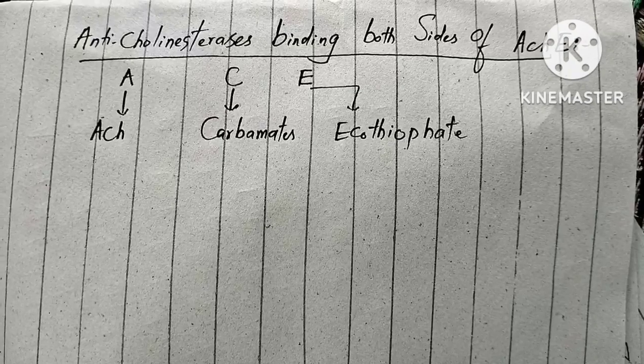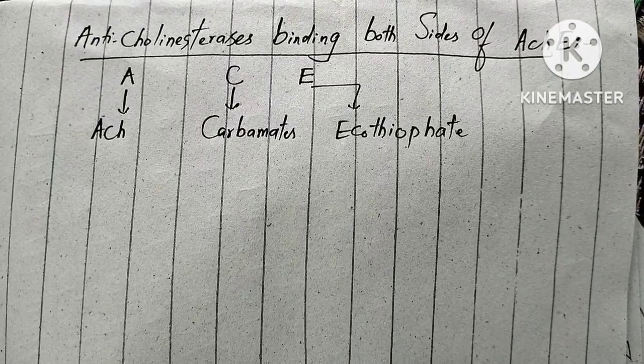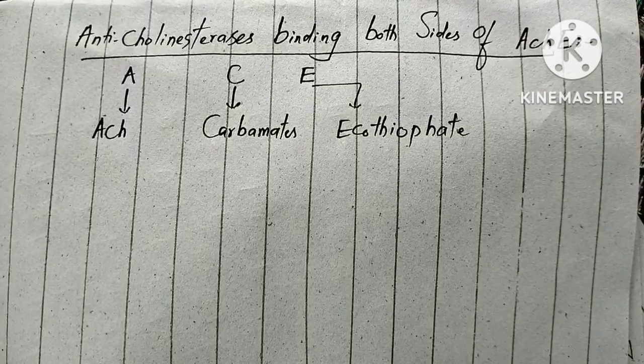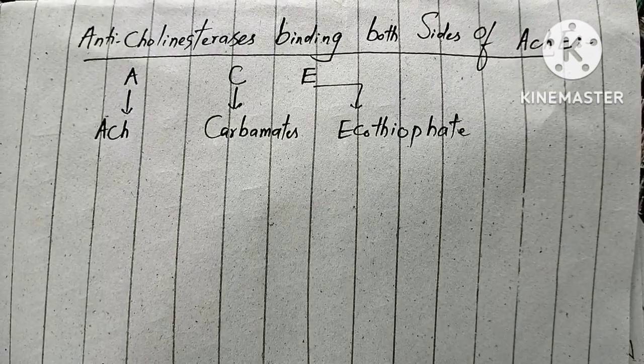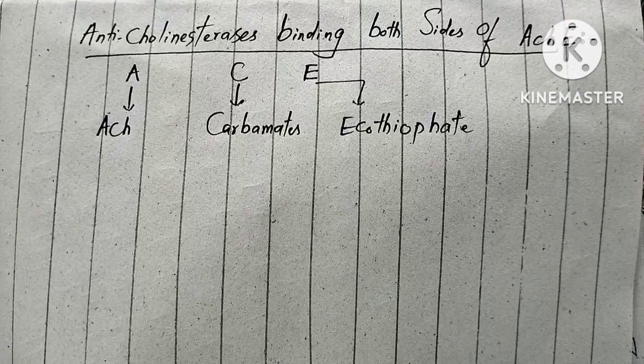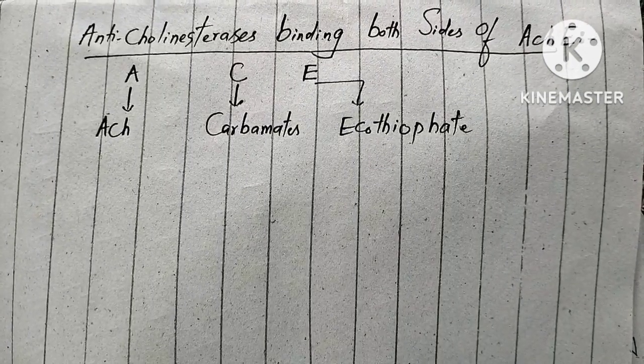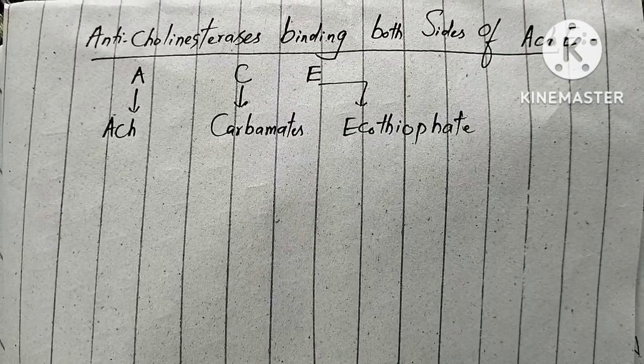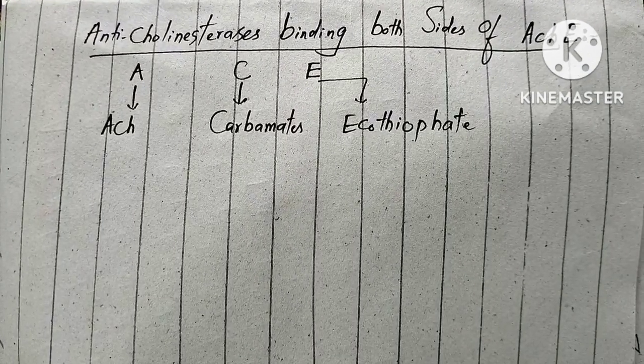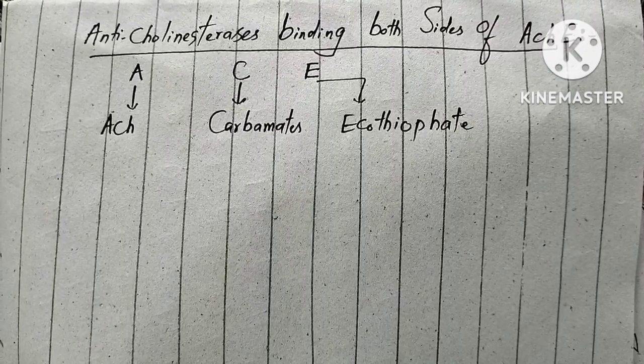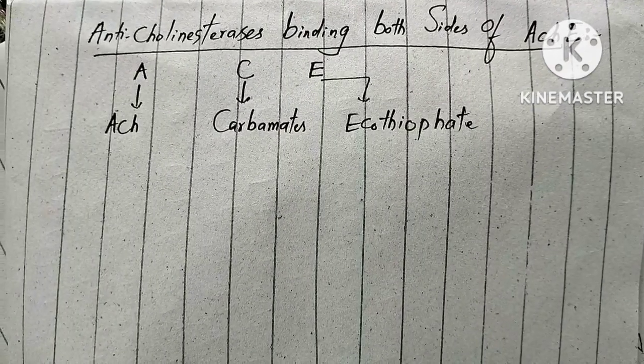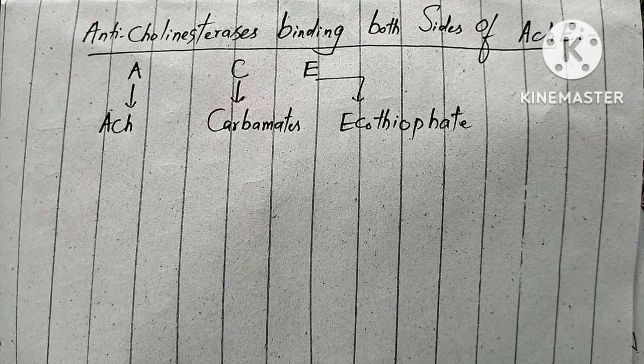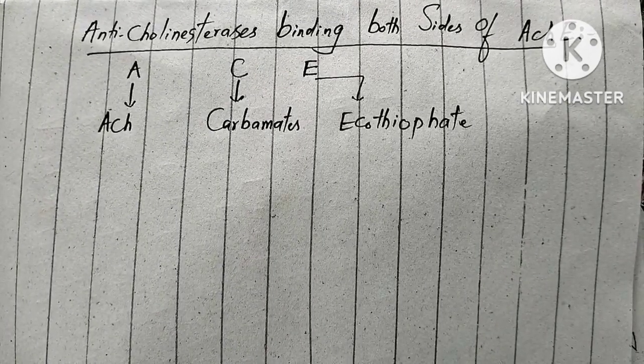The mnemonic is ACE, or acetylcholinesterase. We know that acetylcholinesterase is basically an enzyme which causes hydrolysis of acetylcholine. Now this enzyme has two sides: one is called the anionic side and the other is called the steric side.